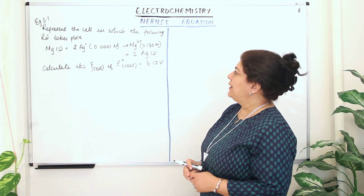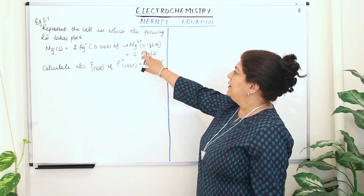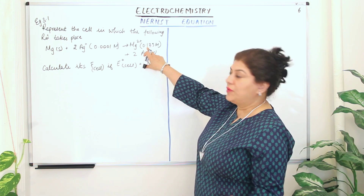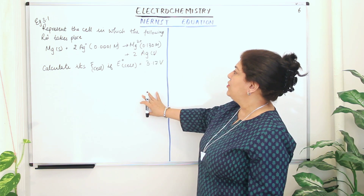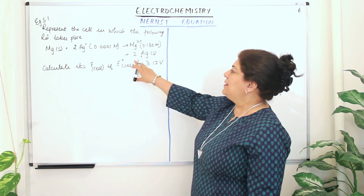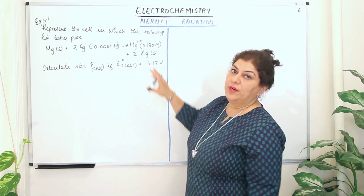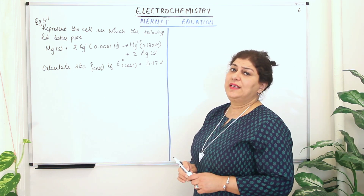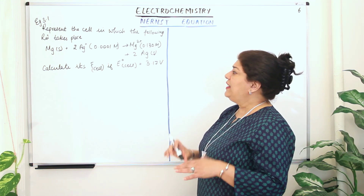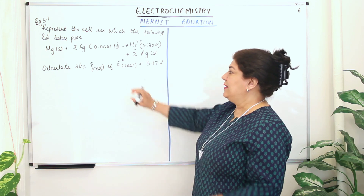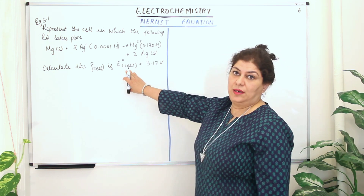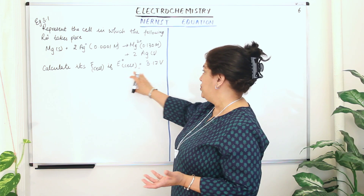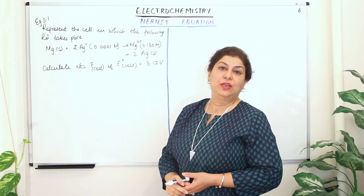This gives you magnesium ions — the concentration of the magnesium salt is 0.130 moles per liter — plus silver, which turns into a solid. You have to calculate the EMF of this cell, given that E⁰cell, the standard EMF of the cell, is 3.17 volts.